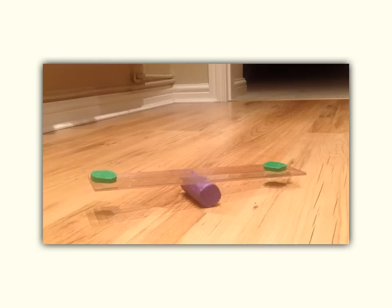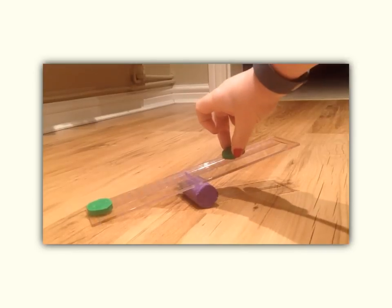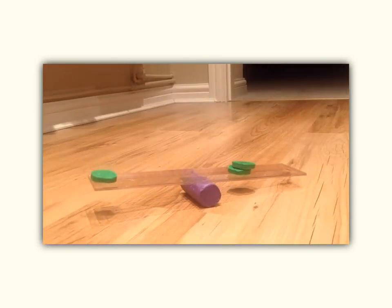So this is that situation again and we have a weight on either end and it is balanced. Now if I move one of the weights closer into the middle it becomes unbalanced and what I have to do to get it to balance up again is to double the amount of weight because I have halved the distance.